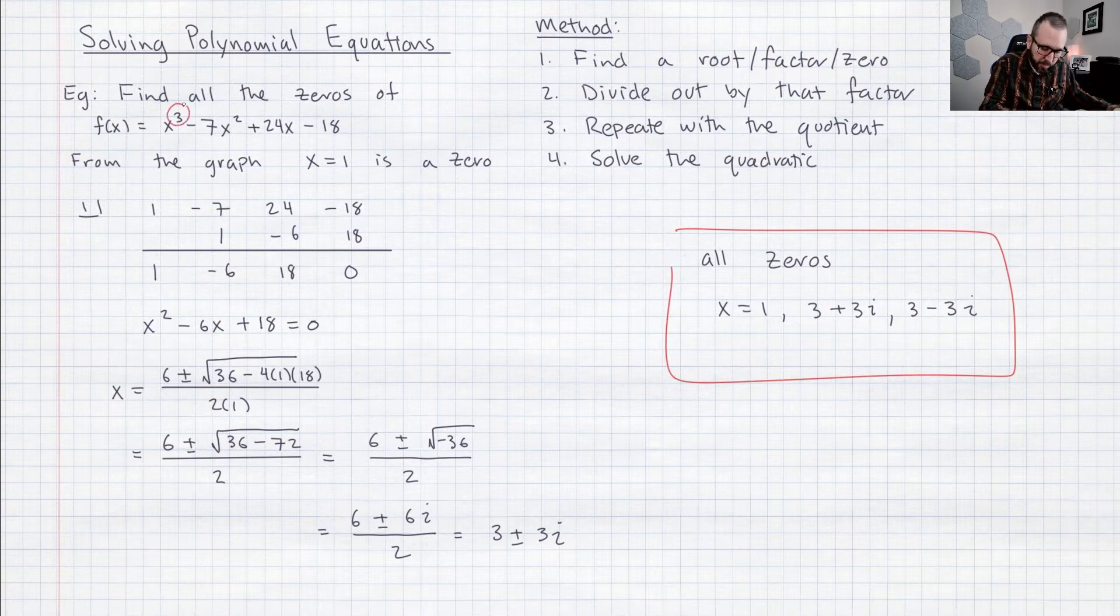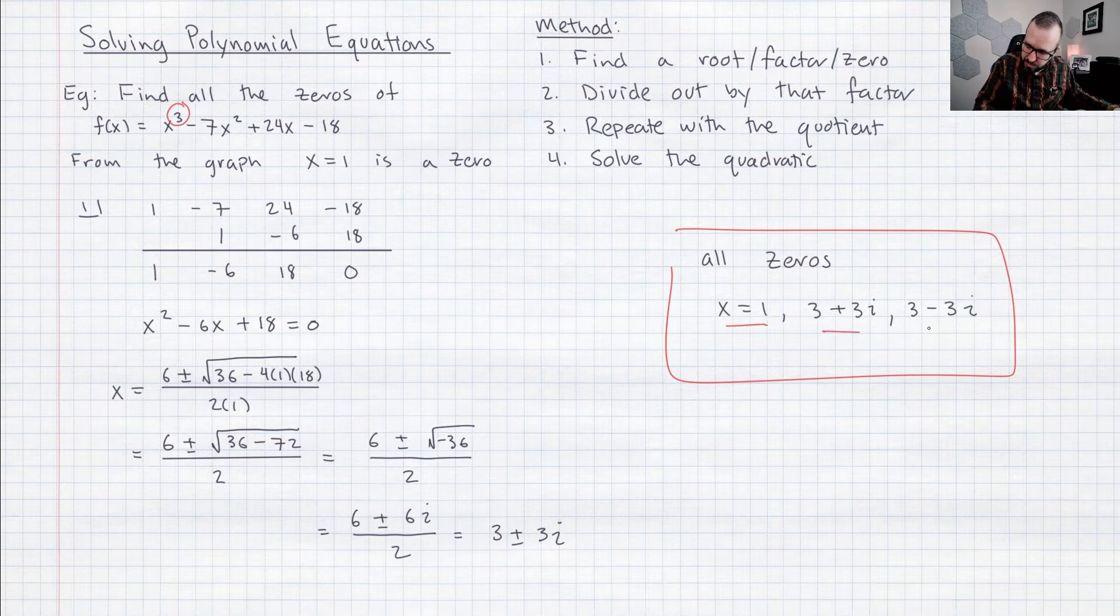You'll see this is a polynomial of degree 3 and we ended up with exactly three zeros here so that must happen.